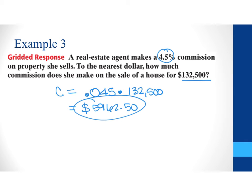Again, if you like to see that proportion we can say that 4.5% is 4.5 out of 100 and this is equal to the commission divided by the whole part which is $132,500 and again you can cross multiply and solve for C.